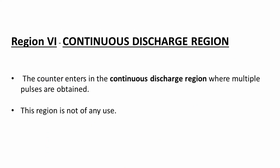The sixth region is the continuous discharge region. After the Geiger region, if the voltage is further increased, then even without any incident radiation you will get a continuous discharge. Therefore this region is of no use. The pulses obtained here are not due to incident radiation but only due to the increased applied voltage.